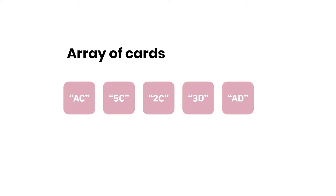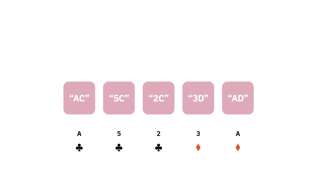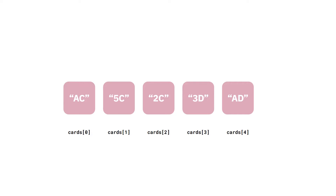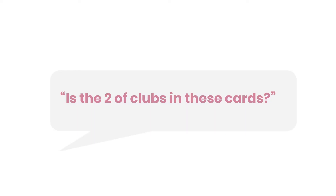Here's another example with actual data. Consider an array of cards similar to what we just worked with — this array has five elements, each represented by a card. On the far left we have AC for ace of clubs, on the far right AD for ace of diamonds. As it's an array, these strings exist within slots: ace of clubs is at position zero, five of clubs at position one, and so forth.